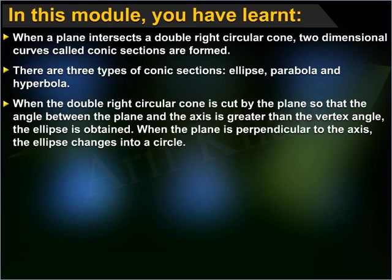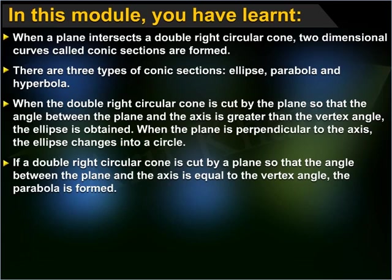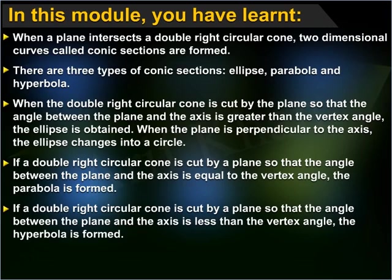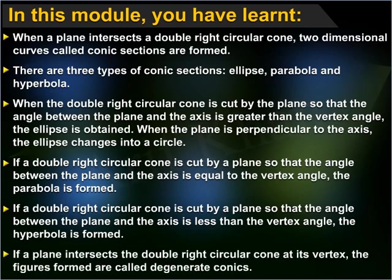When the plane is perpendicular to the axis, the ellipse changes into a circle. If a double right circular cone is cut by a plane so that the angle between the plane and the axis is equal to the vertex angle, the parabola is formed. If a double right circular cone is cut by a plane so that the angle between the plane and the axis is less than the vertex angle, the hyperbola is formed. If a plane intersects the double right circular cone at its vertex, the figures formed are called degenerate conics.